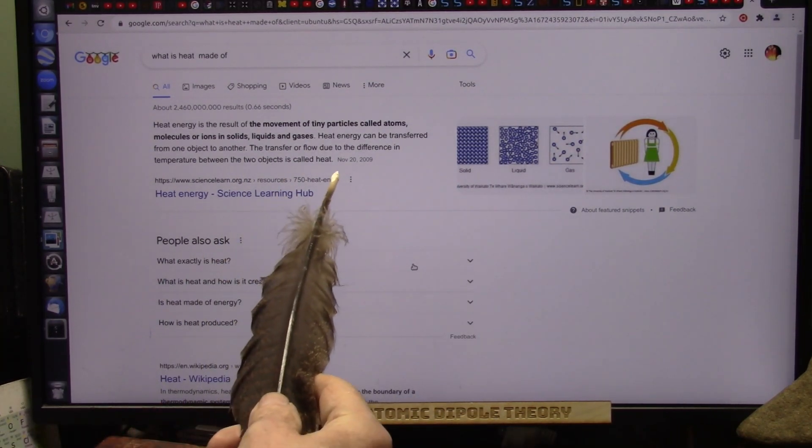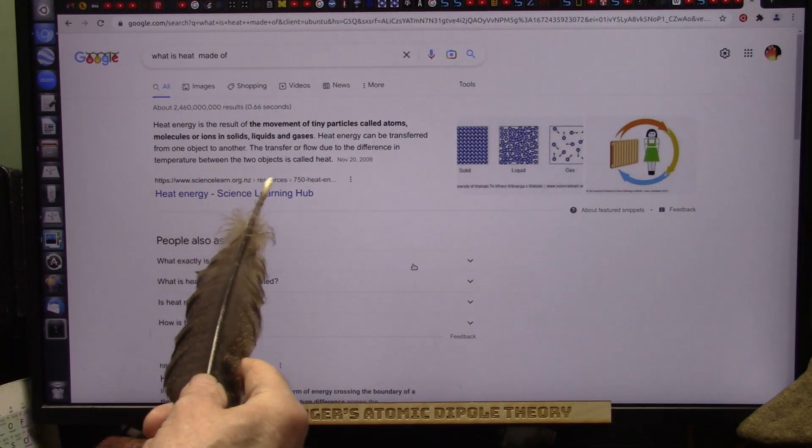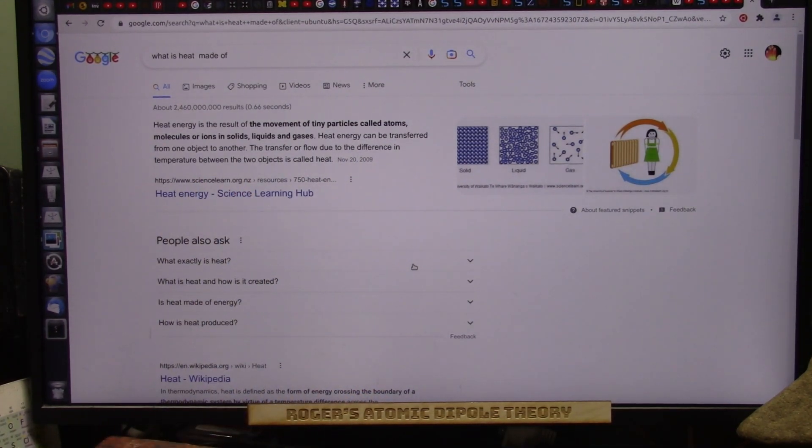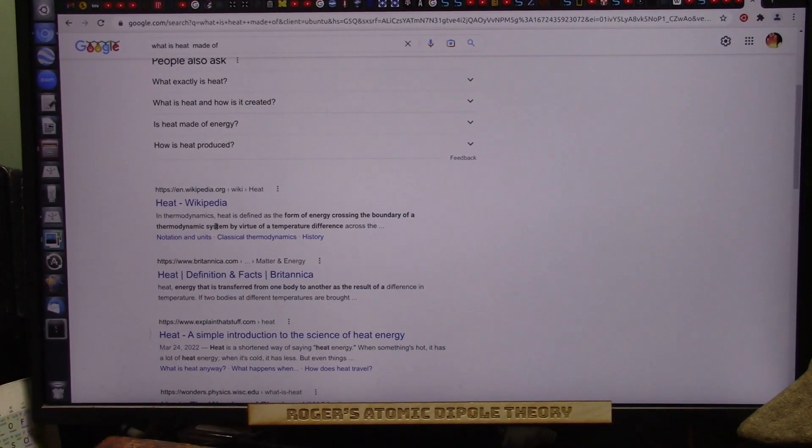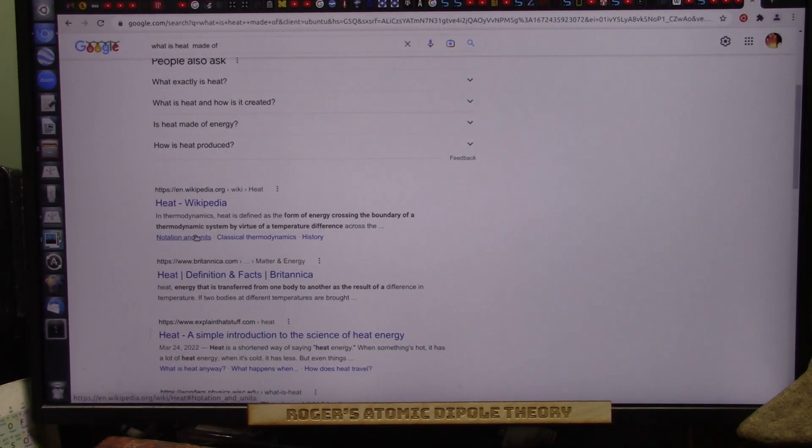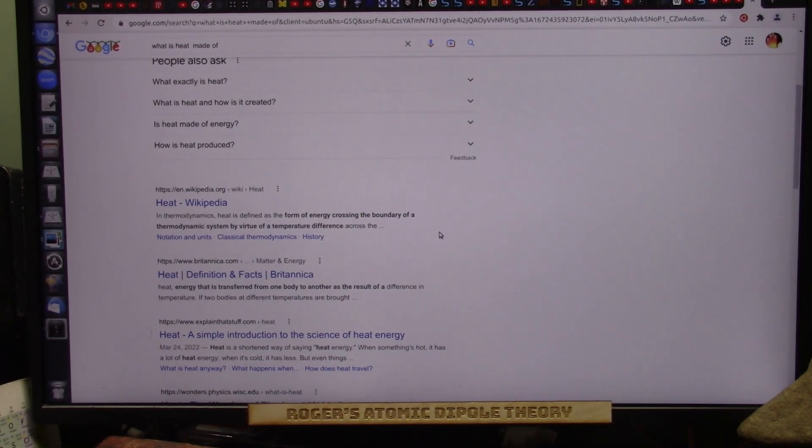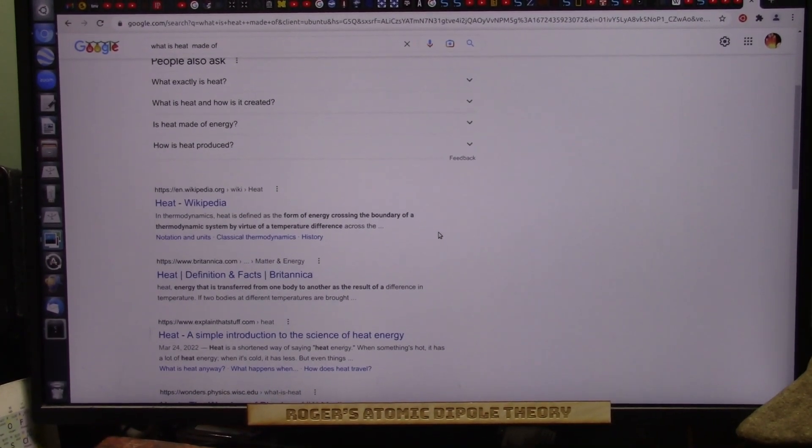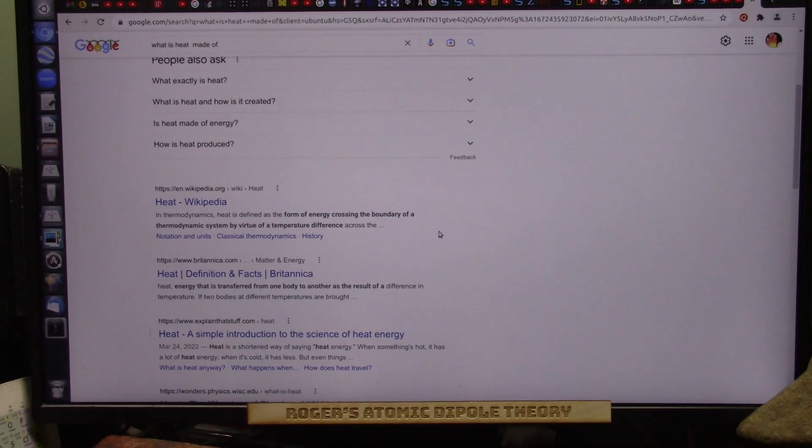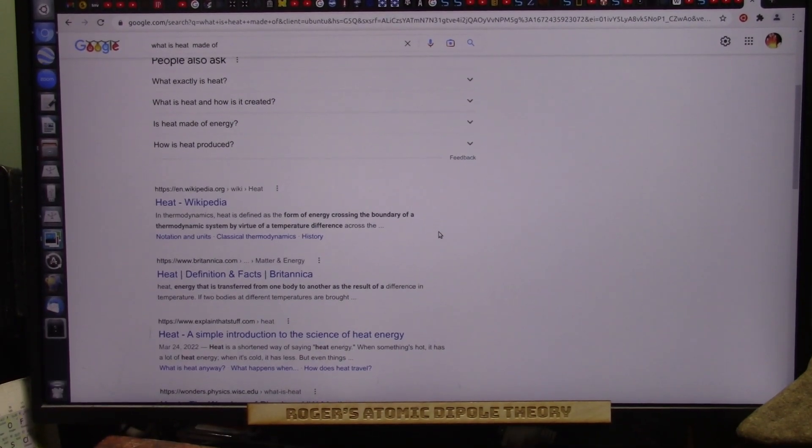The transfer of flow due to the difference in temperature between the two objects is called heat. Due to the difference in temperature, what's the temperature made out of? Heat. In thermodynamics, heat is defined as the form of energy crossing the boundary of a thermodynamic system by virtue of a temperature difference. Well obviously, what is the temperature difference made of? What crosses that boundary? What leaves and what comes versus heat and cold? Who's got the answer to that?